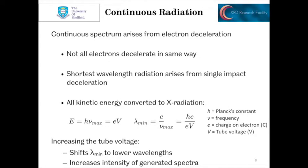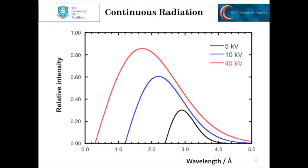The continuous spectrum arises from electron deceleration — not all electrons will decelerate in the same way when they hit the target. The shortest wavelength radiation arises from single impact deceleration, where all of the kinetic energy is converted to X-radiation. As we increase the tube voltage to higher voltages, we get X-rays produced with lower wavelengths. Increasing the tube voltage also shifts the minimum wavelength lower and increases the intensity of the generated spectrum, as we can see in the plots of 5, 10, and 40 kilovolts.